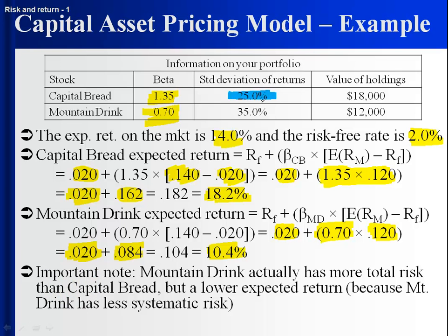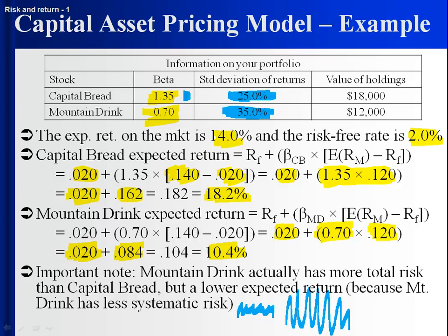Something really interesting here: the standard deviation of returns for Capital Bread is actually less than Mountain Drink — Capital Bread's returns bounce around less. But what matters is how much of that volatility is due to systematic risk, because you can't diversify that away. Capital Bread has more systematic risk — more of its bouncing around is due to macroeconomic news. So even though its total risk is less, its systematic risk is higher, and that's why Capital Bread has a higher expected return.